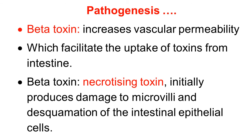Both alpha toxin and beta toxin are very dangerous. Beta toxin increases vascular permeability, which facilitates the uptake of toxins from the intestine into the circulation. Beta toxin is a necrotizing toxin that initially produces damage to the microvilli of the intestine and desquamation of the intestinal epithelial cells, causing further pathogenesis within the intestinal cells.